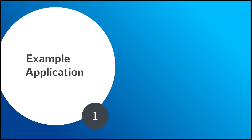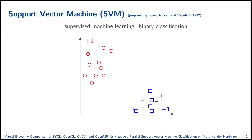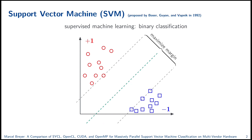As an example application for our comparison, we used an implementation of support vector machines. SVMs are used in supervised machine learning for binary classification in their original formulation. In our example we have two classes — the red circles and the blue squares — with labels minus one and plus one. If we want to classify those classes, we can separate them using a hyperplane. SVMs do not calculate a random hyperplane; they calculate the hyperplane which separates both classes the best, maximizing the margin. This hyperplane is called the decision boundary, and data points lying on the margin are called support vectors — hence the name support vector machine.